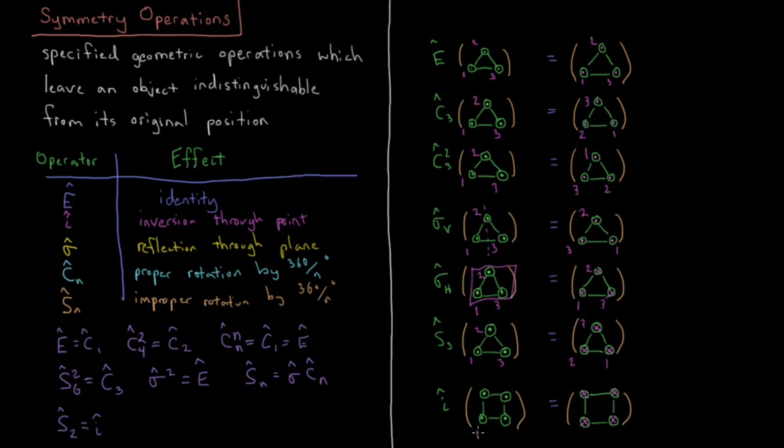And finally, inversion, if I label these one, two, three, four, they invert through the center of symmetry, which is that point in the middle there. So one and three change places. They invert to each other and two and four change places. They invert to each other.